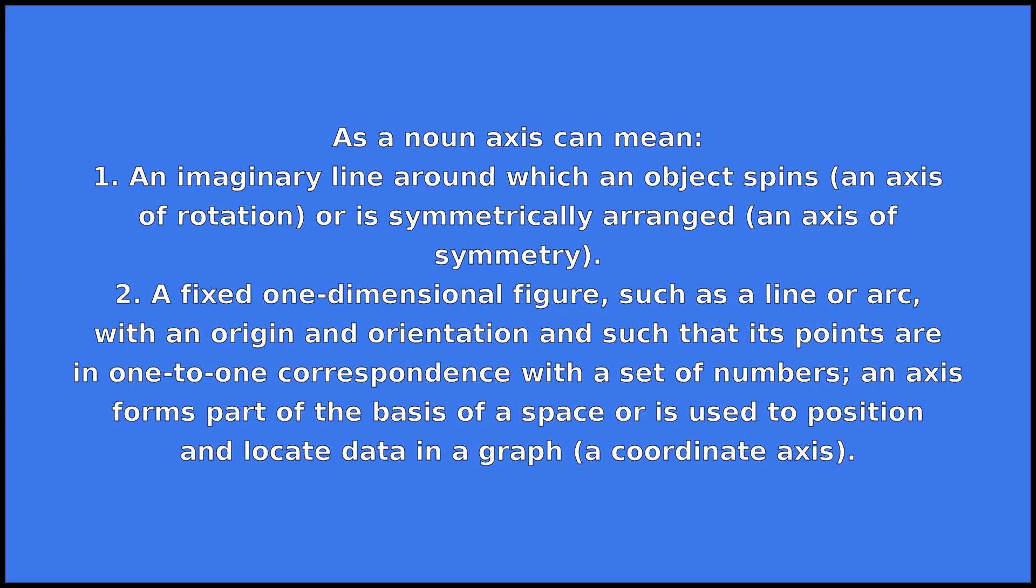As a noun axis can mean: 1. An imaginary line around which an object spins, an axis of rotation, or is symmetrically arranged, an axis of symmetry.